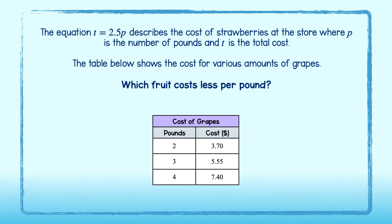Okay, your turn. The equation t equals 2.5p describes the cost of strawberries at the store, where p is the number of pounds, and t is the total cost. The table below shows the cost for various amounts of grapes. Which fruit costs less per pound? Take a minute and try to figure this one out. Remember to pause the video for more time.